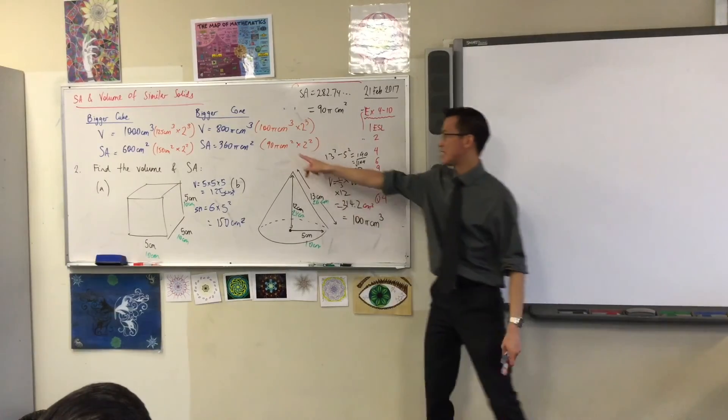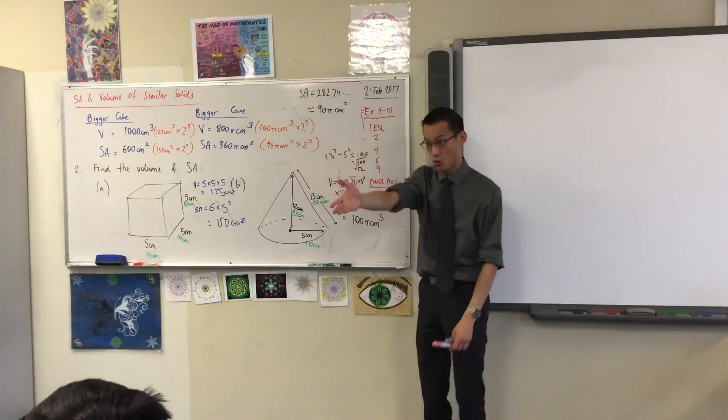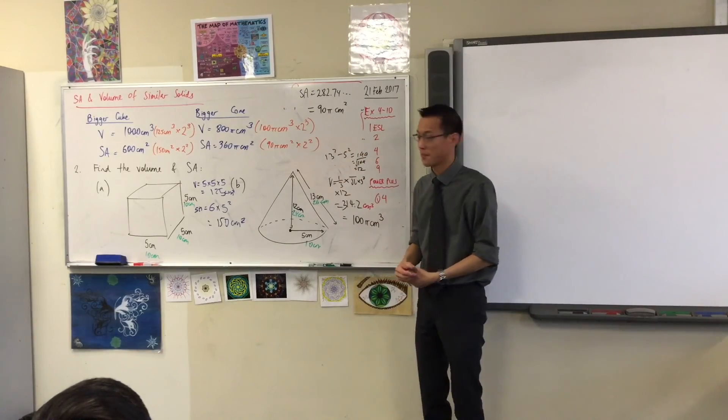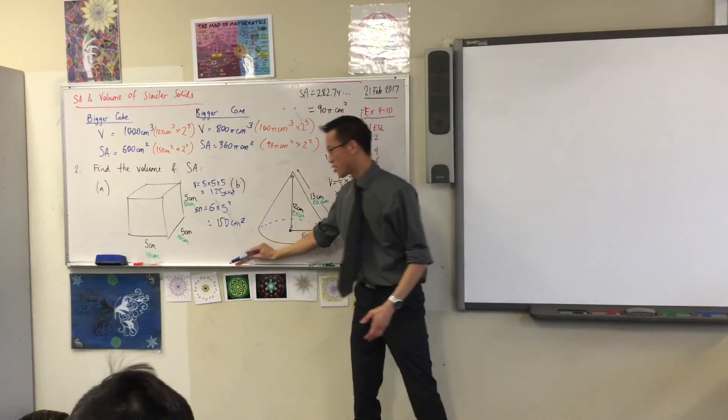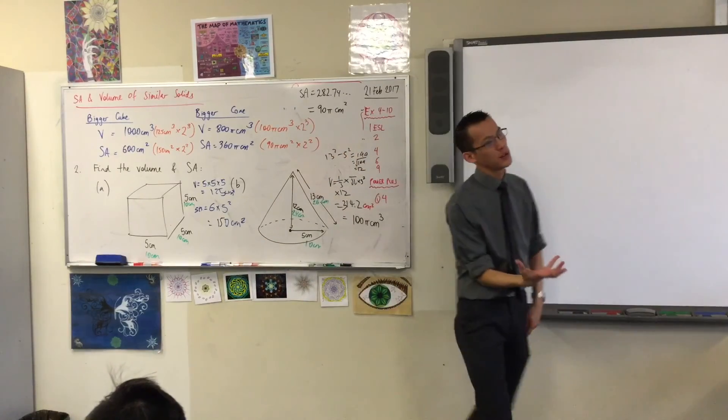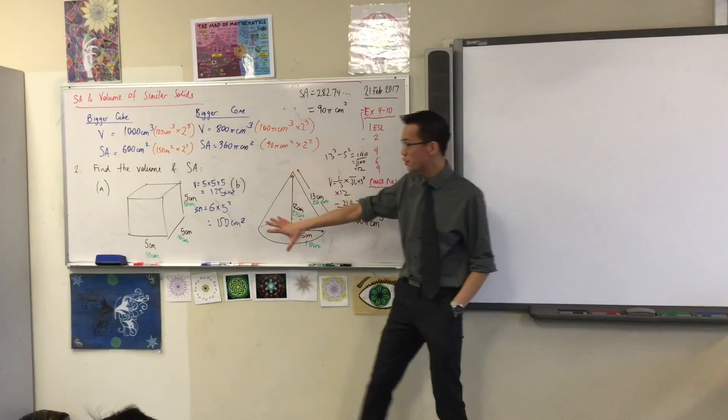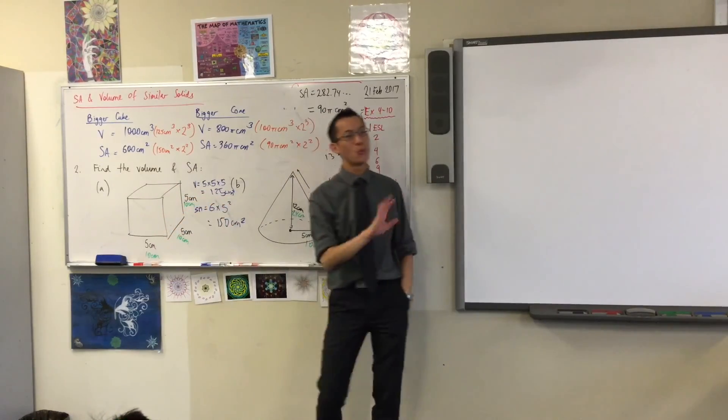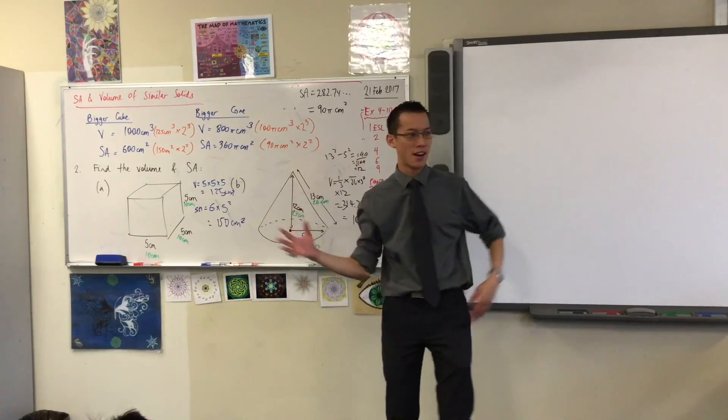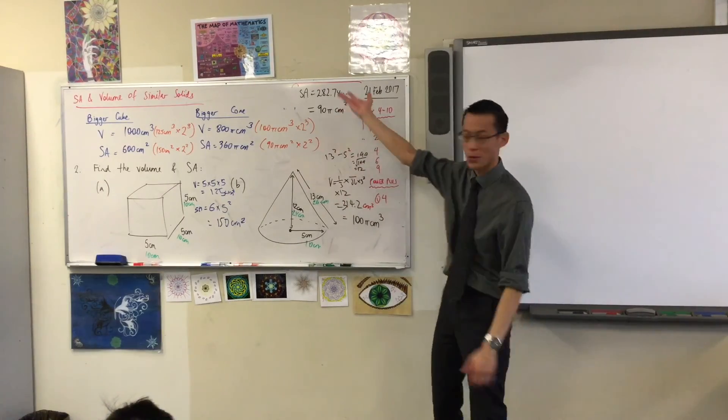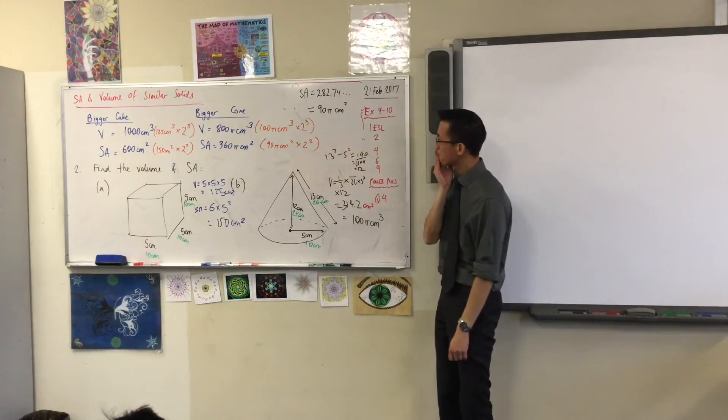So, this 90 pi is what your original, that 282 number that you gave me, that's where it came from before you pressed equals on your calculator and approximated it. Okay? So, this is why we looked at areas of similar figures last week. It was sort of to gear you up for this. If you know the volume of a shape, you can work out the volumes or surface area for any shape that's the same kind of thing, but bigger or smaller. Okay? Which is what we call similar.